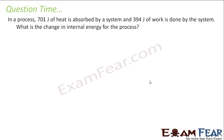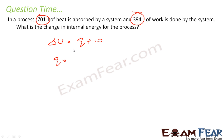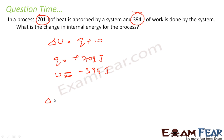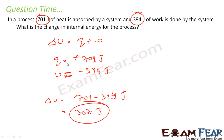In a process, 701 joules of heat is absorbed by the system and 394 joules of work is done by the system. Heat absorbed means q is positive; work done by the system means w is negative. So delta U = q − w = 701 − 394 = 307 joules.